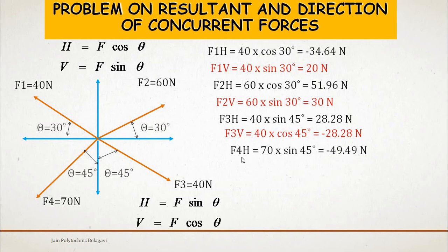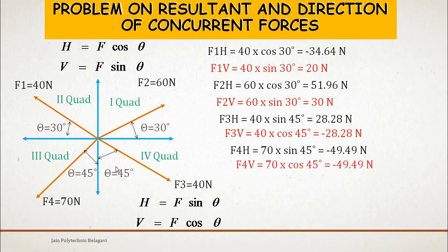F4 has a horizontal component acting in the negative direction: −49.49 N. The vertical component of F4 is also negative, as it acts downward at 45° with respect to the y-axis. Using 70 cos θ for the vertical component, both components of F4 are negative — one acts leftward and the other downward.